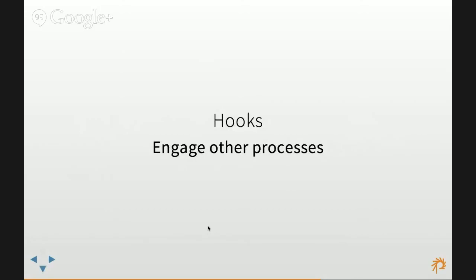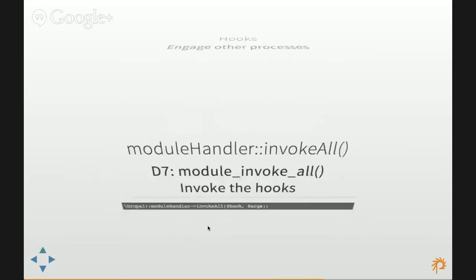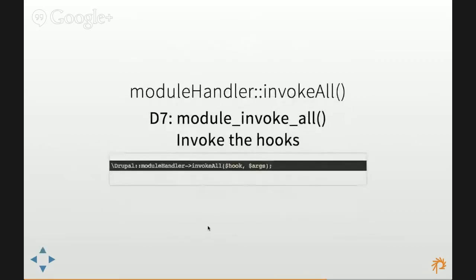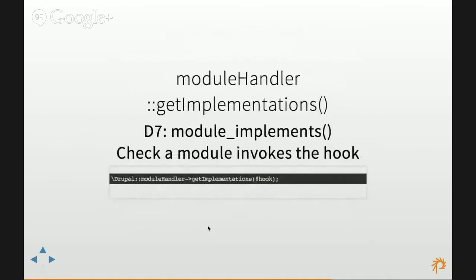For hooks: instead of module_invoke_all, you have the invokeAll() static method, which can be called from the global Drupal namespace — use it just like module_invoke_all, passing in your hook. To check if a module implements a specific hook in D8, use getImplementations() as part of the module handler class.